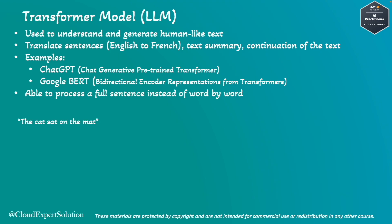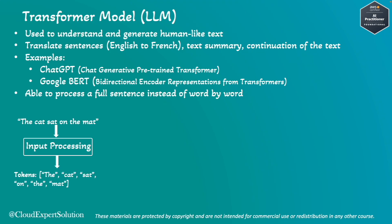Let's say we have the text 'the cat sat on the mat' and we want to feed this text — maybe we want a translation from English to French, or maybe we want a summary. Now let's see how the transformer model will work. The first step is input processing: the transformer takes the text data and breaks it down into smaller pieces or fragments called tokens. So after the input processing layer, we get a bunch of tokens — 'the', 'cat', 'sat', 'on', 'the', 'mat' — these are all individual tokens.